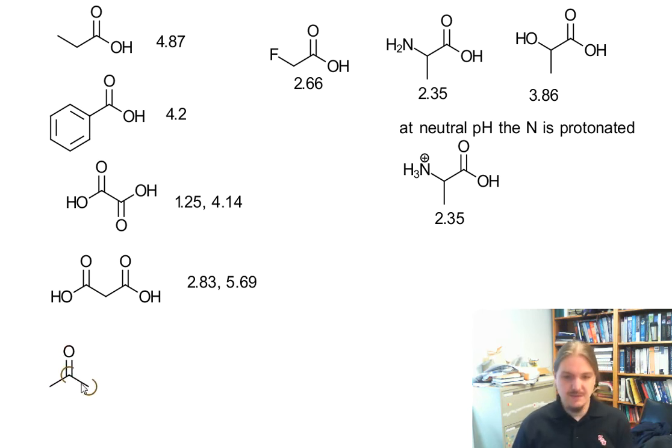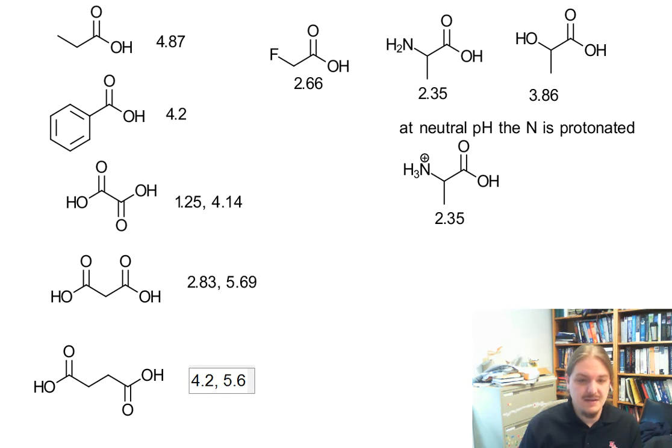What I will share with you though, is that succinic acid, the four carbon acid, the first pKa of succinic acid is 4.2, and the second one is 5.6. So the effects of the carboxylic acids on each other and their pKa's is decreasing the farther apart they get.